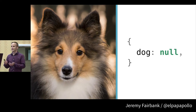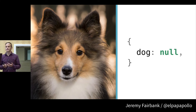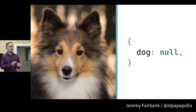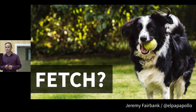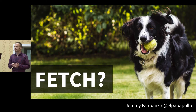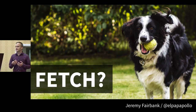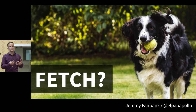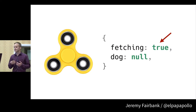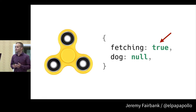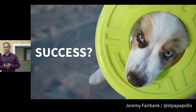Let's use as an example an application that fetches a dog from a server — say, a rescue adoption application. The first piece of state we need is the dog itself; initially we use null. This represents the implicit initial ready state. When fetching, we should provide feedback in the UI, so we add a Boolean property called fetching. When it's true we display a spinner; when it's false we assume we're in the ready state waiting to fetch.